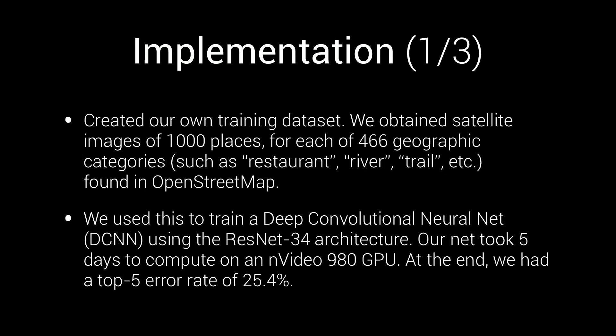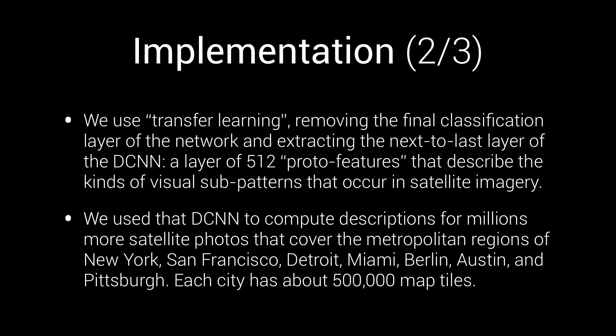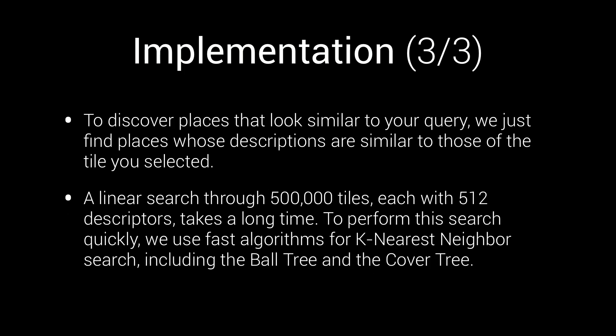In this section, we discuss how we built TerraPattern. Many machine learning breakthroughs are constrained not by the limitations of algorithms, but by the availability of high-quality training datasets. To create TerraPattern, we first had to make a dataset of satellite imagery, then trained a neural net with this. We used transfer learning, a technique that allows us to describe and match satellite tiles using high-level visual descriptors such as circles, right angles, and common textural patterns. To discover places that look similar to your query, we find places whose descriptions are similar to those of the tile you selected. We used fast techniques like cover trees to make this work in real-time.